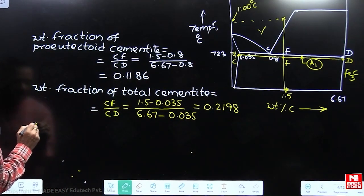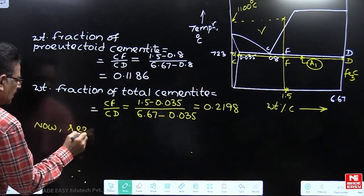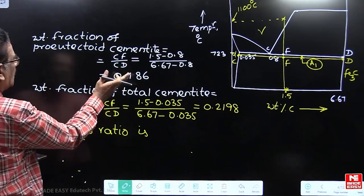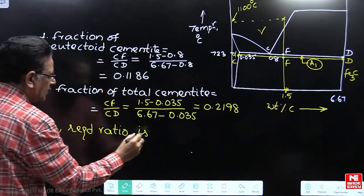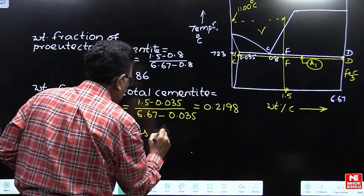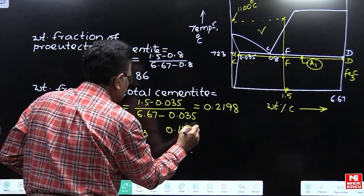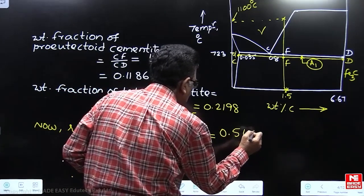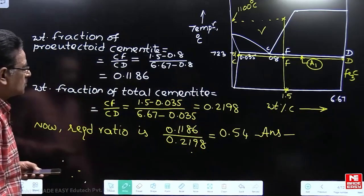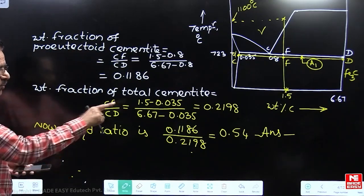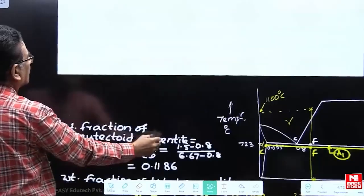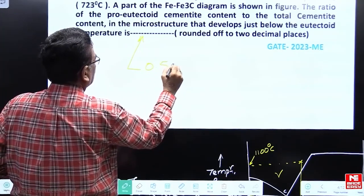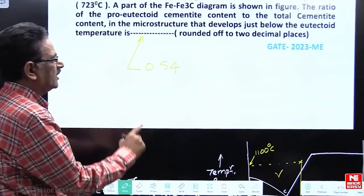Now the required ratio is the weight fraction of pro-eutectoid cementite to total cementite: 0.1186 divided by 0.2198, which gives 0.54. This is the correct answer for this question. So in the fill-in-the-blank, 0.54 is the right answer.